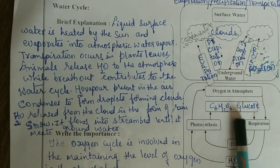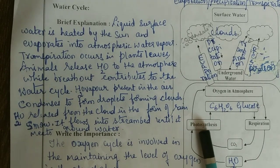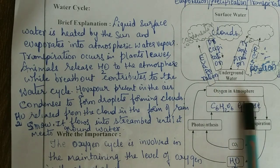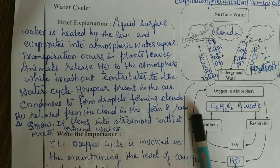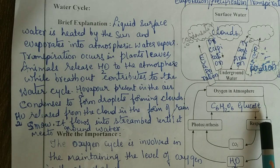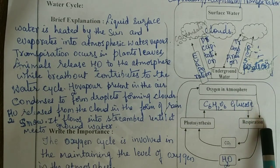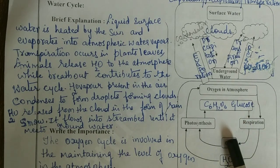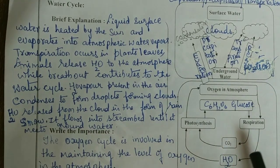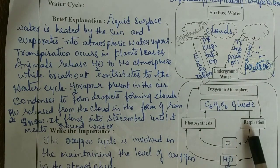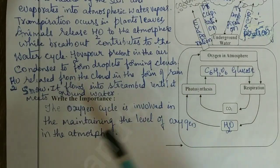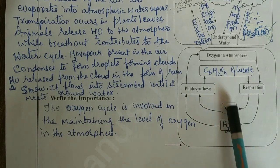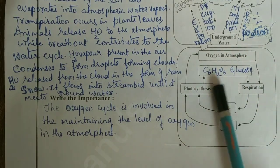This is the oxygen cycle. During photosynthesis, in the presence of sunlight, oxygen and glucose are the byproducts — oxygen is released and reaches the atmosphere. During respiration in animals and humans, we inhale oxygen and exhale carbon dioxide; carbon dioxide and water are the byproducts. This carbon dioxide links back to photosynthesis. The oxygen cycle maintains the level of oxygen in the atmosphere. The carbon cycle and oxygen cycle occur independently but are interlinked and help each other.